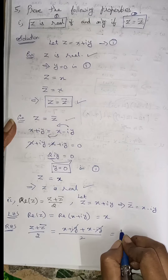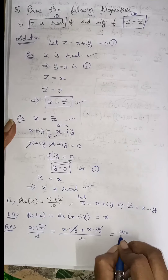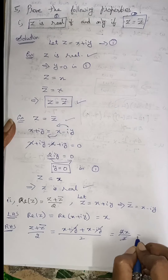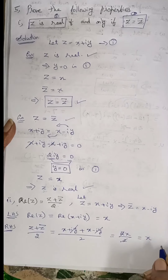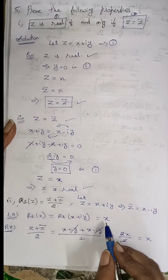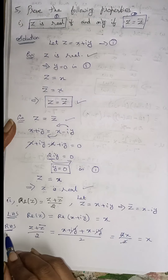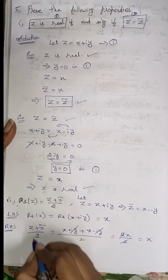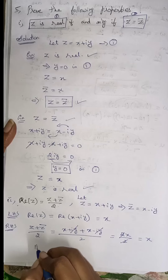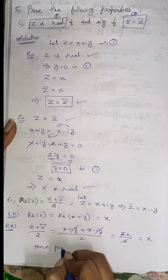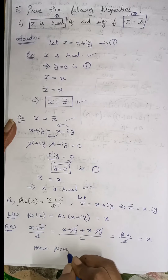The iY and minus iY cancel. X plus X is 2X divided by 2, and the 2s cancel to give X. So LHS equals X and RHS equals X. Hence proved. The real part of Z equals Z plus Z bar divided by 2 is proved.